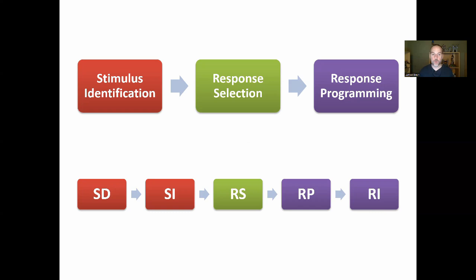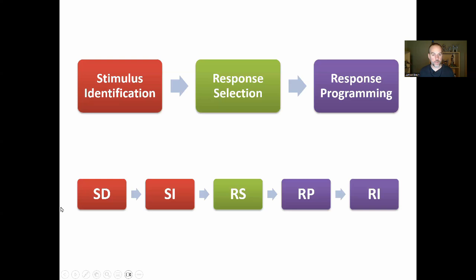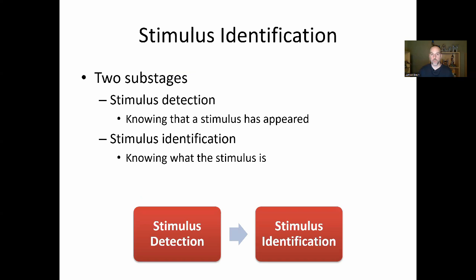To summarize: we have our three main stages of information processing — stimulus identification, response selection, and response programming. In some experiments like Donders' subtraction logic, we need to divide a few stages into sub-stages: stimulus identification breaks into two sub-stages, response selection stays as one, and response programming also breaks into two sub-stages. So often we'll use the three-stage model; other times we'll need a more detailed five sub-stage model.